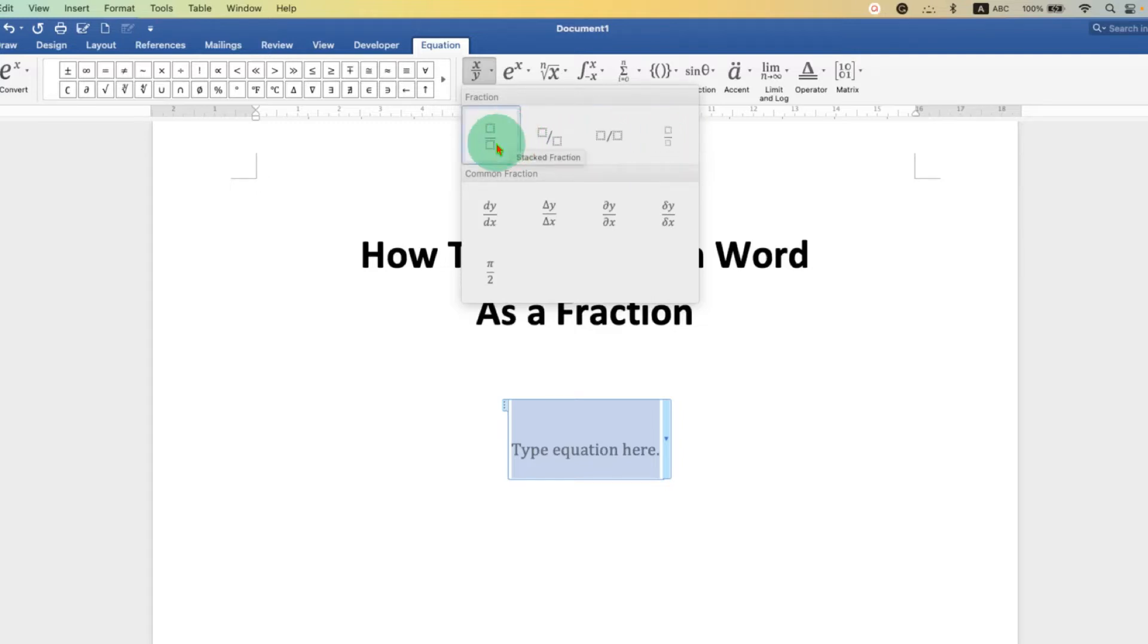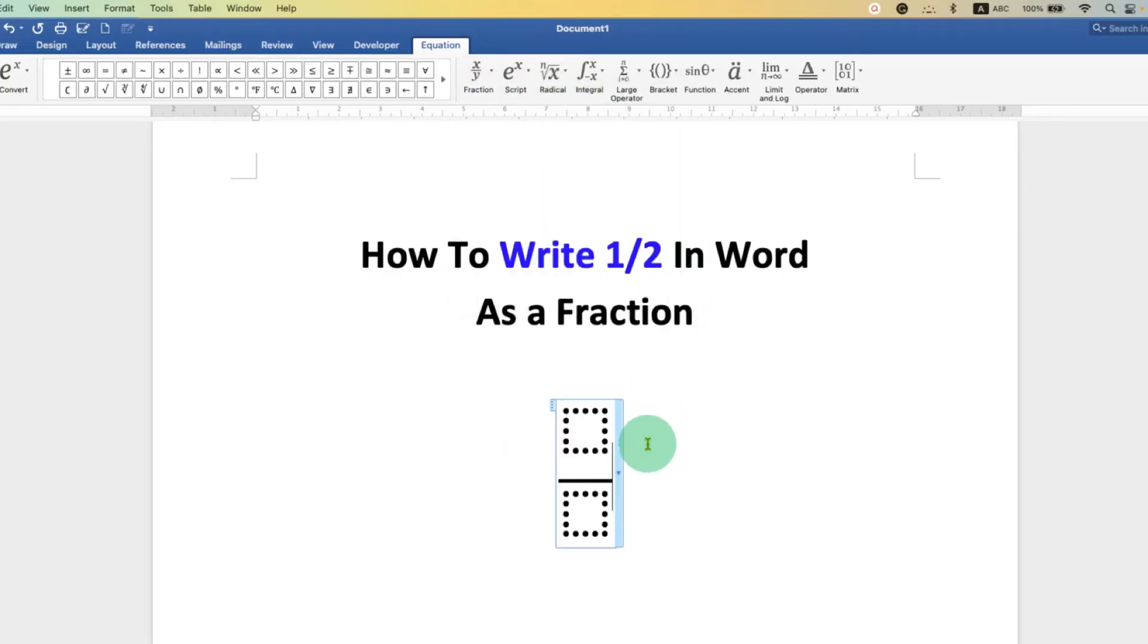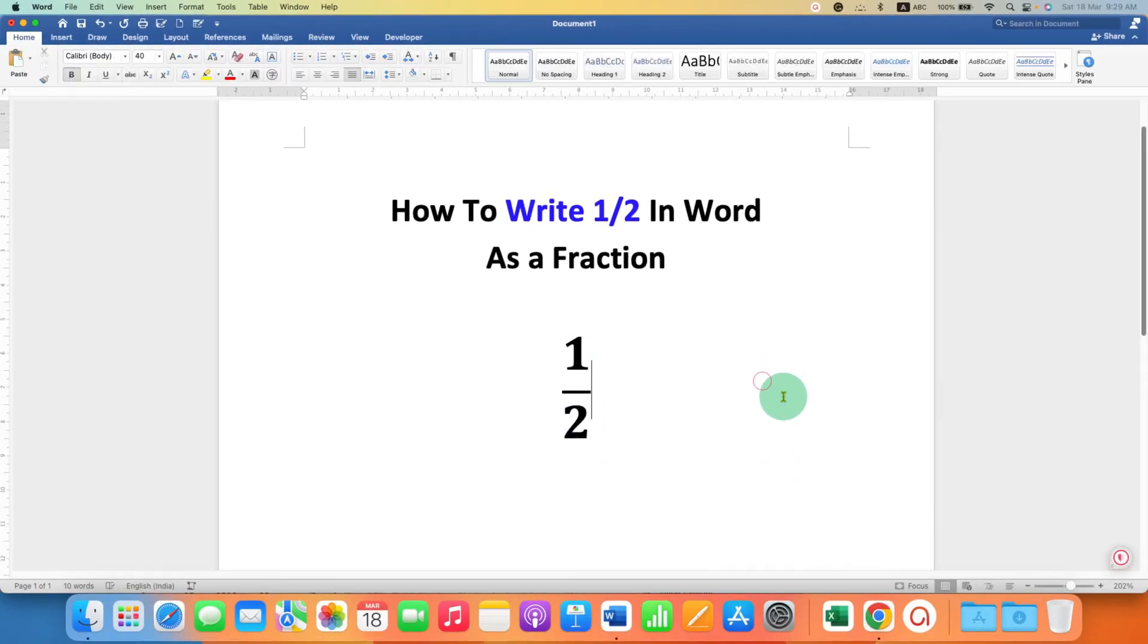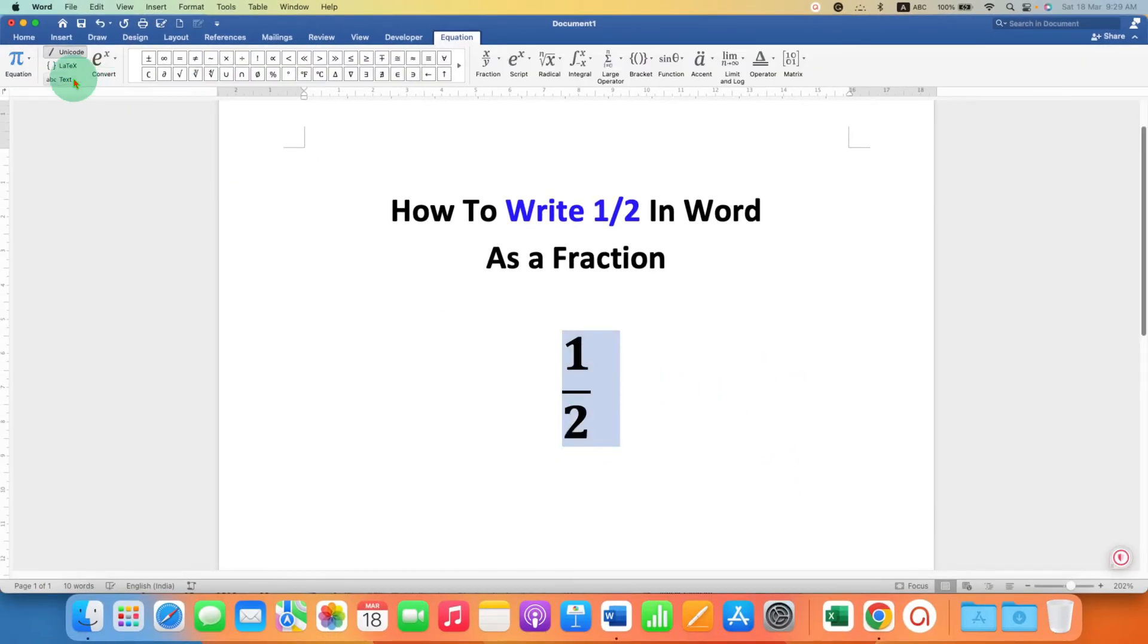So for example I am selecting stacked fraction. After clicking the stacked fraction you will see these dotted boxes. Just type the numbers inside the dotted boxes and if you want to bold or italicize you can do that as well from here.